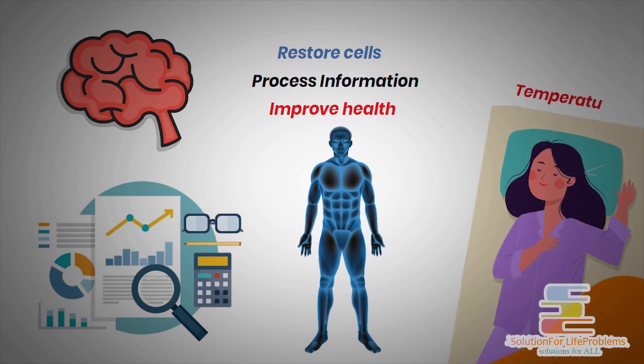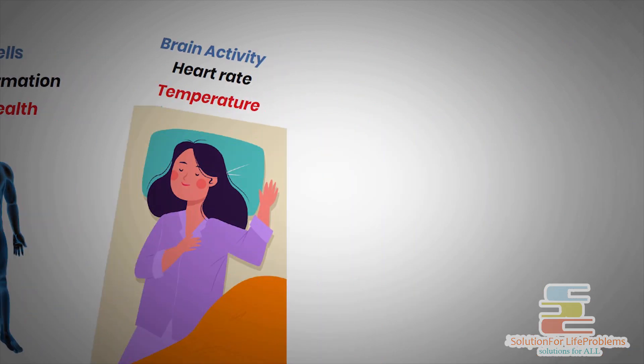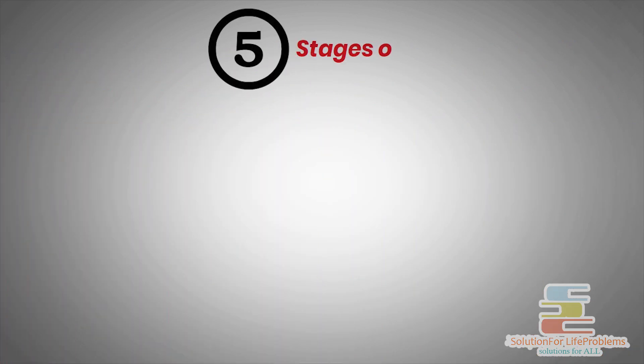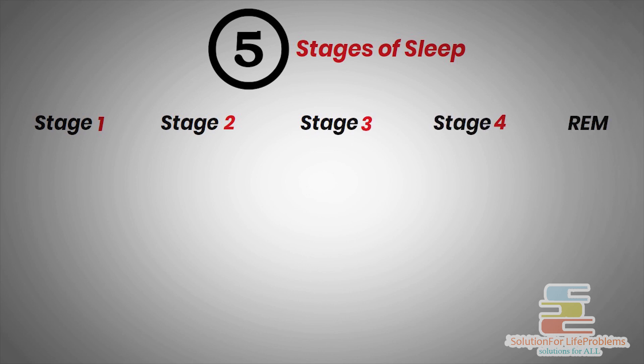During sleep, your temperature, heart rate and brain activity changes according to phases. There are five primary stages of sleep: Stage 1, 2, 3, 4 and REM.